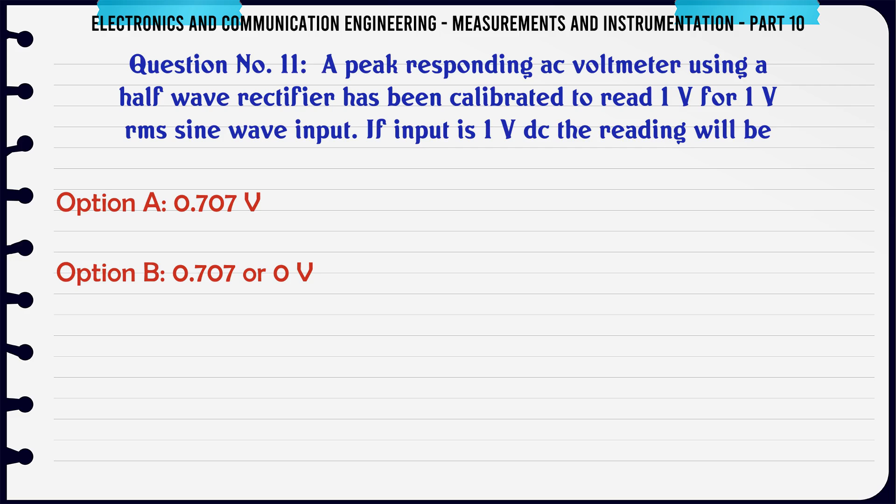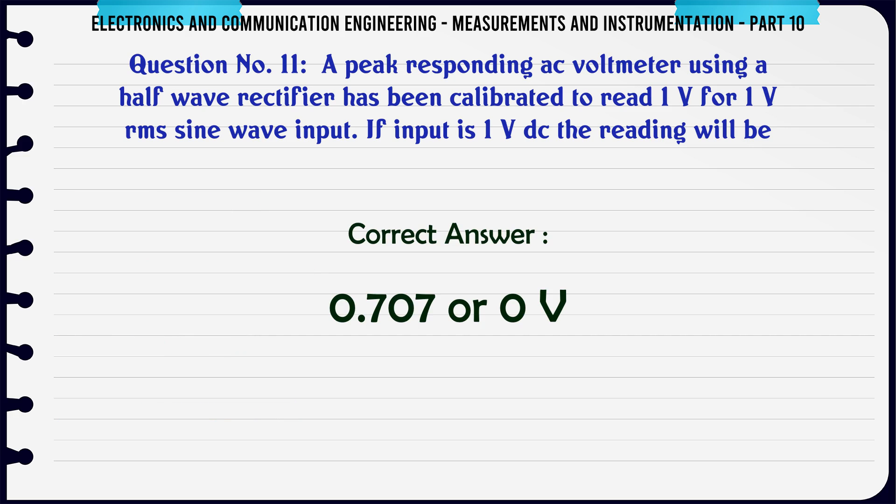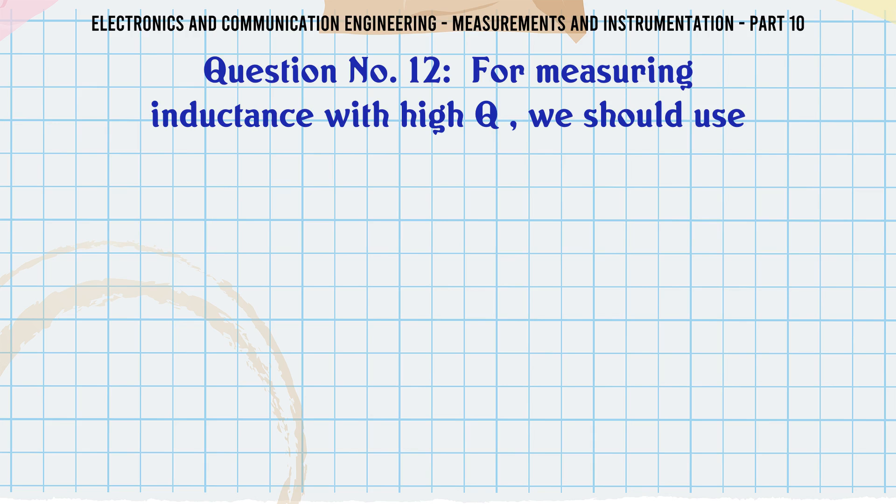A peak responding AC voltmeter using a half-wave rectifier has been calibrated to read 1V for 1V RMS sine wave input. If input is 1V DC, the reading will be: A) 0.707 V, B) 0.707 or 0V, C) 1.414 V, D) 1.414 or 0V. The correct answer is 0.707 or 0V.